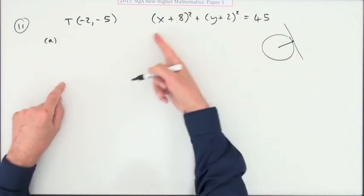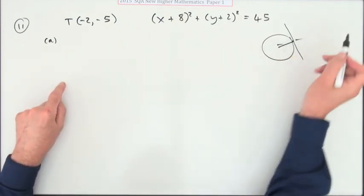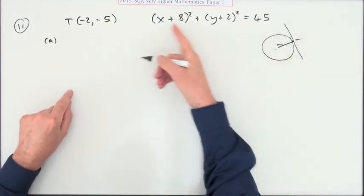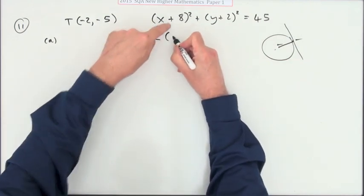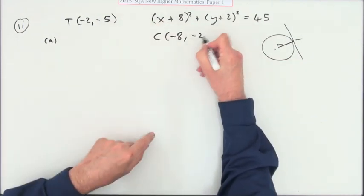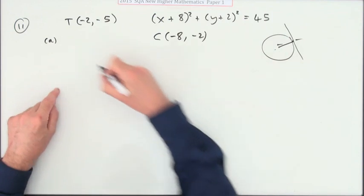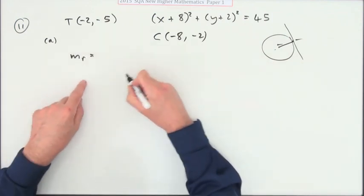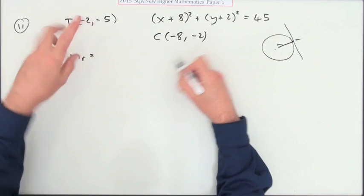So first thing would be you get the center and get this point, get the equation, the gradient of the radius. So the center of that circle will simply be negative 8, negative 2. So the gradient of the radius, I will call it m_r, will be the difference in the y-coordinates.